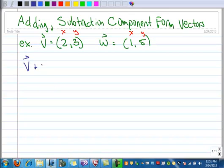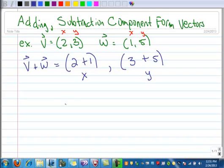vector v plus vector w, so we're going to add the x parts, so that would be 2 plus 1, so that's my new x part, and I add the y parts, 3 plus 5, so that's my new y part.